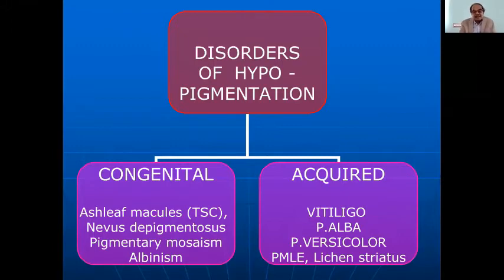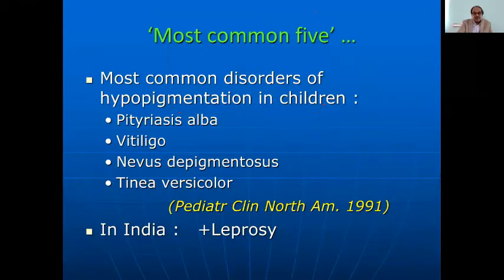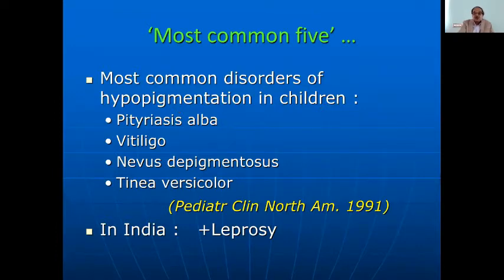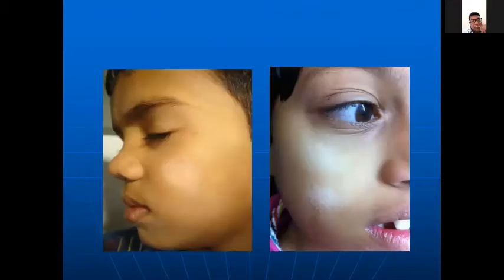The congenital ones include ash-leaf macules in tuberous sclerosis, nevus depigmentosus or pigmentary mosaicism, and sometimes albinism. But the most common five are pityriasis alba, vitiligo, nevus depigmentosus, tinea versicolor or pityriasis versicolor, and in India you must also add leprosy.